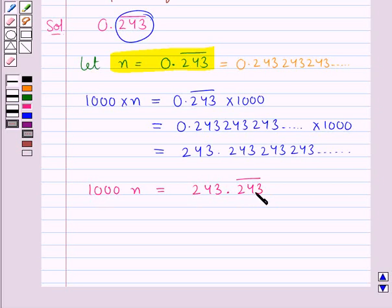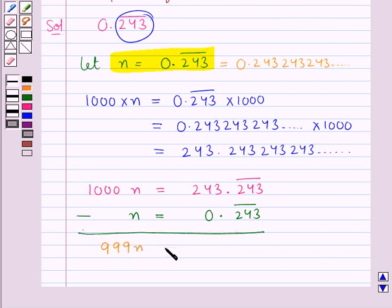Now, from this, let us subtract n equals 0.243 bar. We would get 999n equals 243.